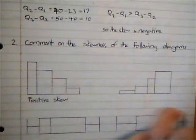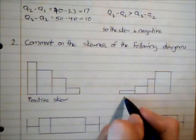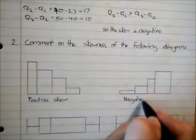And this one here which is all bunched up at the other end, we can refer to that as having negative skew.